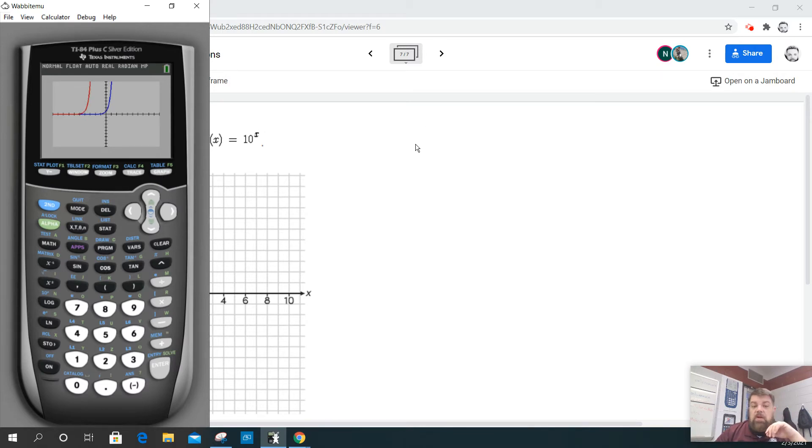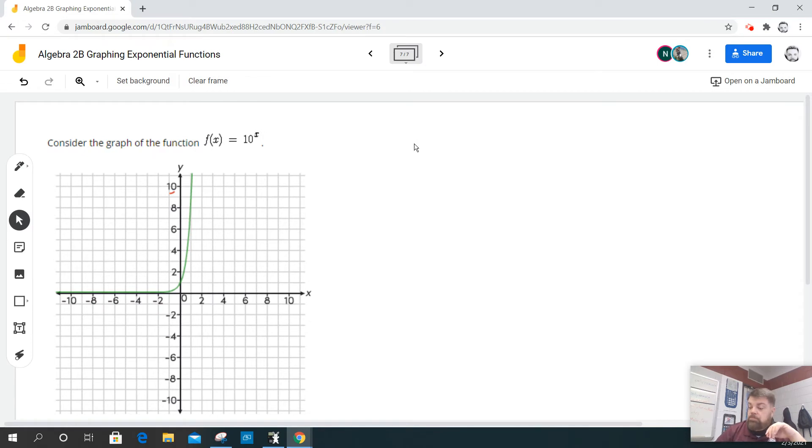So remember that when you have a function, if f(x) equals 10^x and g(x) is equal to f(x+4), this is what we call a horizontal shift. So it's the same values, it's just that they're going to be shifting to the left 4.